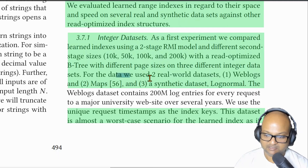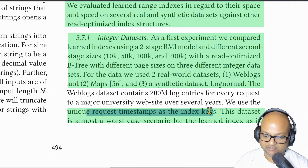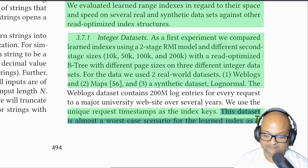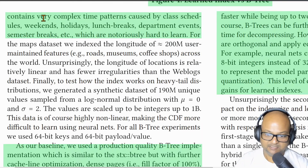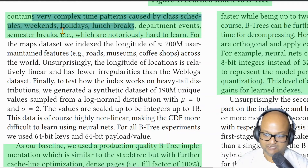They ran some benchmarks on some real world data sets, mostly logs of web accesses, where the request timestamp was the key they were looking at. Note that this is not a convenient data set for a machine learning algorithm to build a model out of because these requests are ultimately coming from humans and reflect things like the time of the day, whether it was a weekend or not, whether it was a holiday or not.